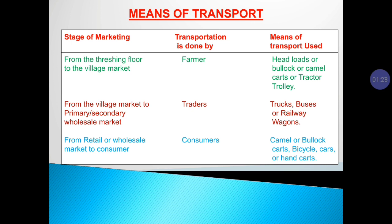The next stage is from the village market to primary, secondary, and wholesale markets. Transportation is done by traders, and the kind of transport they use is trucks, buses, or railway wagons.